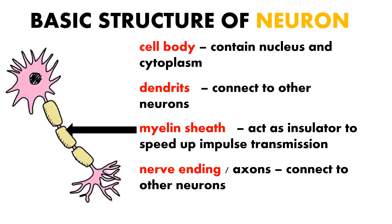The neuron also has the myelin sheath, which acts as an insulator and also to speed up impulse transmission. Most neurons are about one meter long in our body, so without the myelin sheath, impulse transmission might get slower and our response might also get slower. One adaptation neurons have is covering parts of the axon with the myelin sheath.